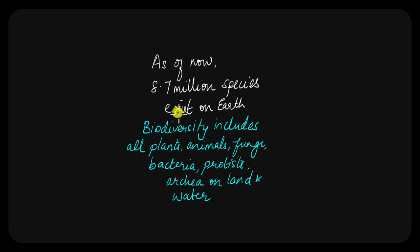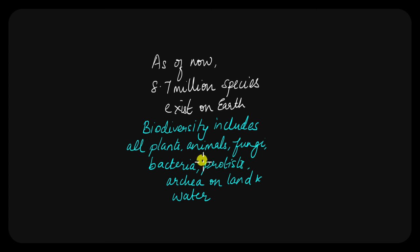There are so many other species that have not been identified so far — some that live deep in the trenches of the oceans or in the Amazonian rainforest. There are so many species that have not been characterized so far. But biodiversity includes all the plants, the animals, the fungi, the bacteria, archaea, and protists that live on both land and water.